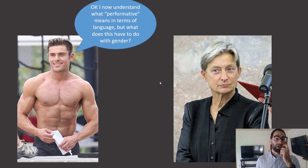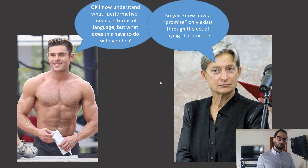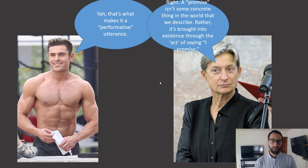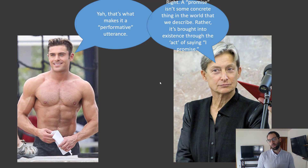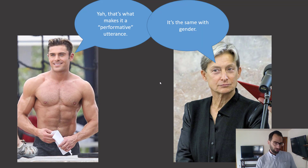Zac Efron has just learned about J.L. Austin. He says: 'I now understand what performative means in terms of language. But what does this have to do with gender?' Butler says: 'You know how a promise only exists through the act of saying I promise? That's what makes it a performative utterance. A promise isn't some concrete thing in the world that we describe — rather, it's brought into existence through the act of saying I promise. It's the same with gender.'